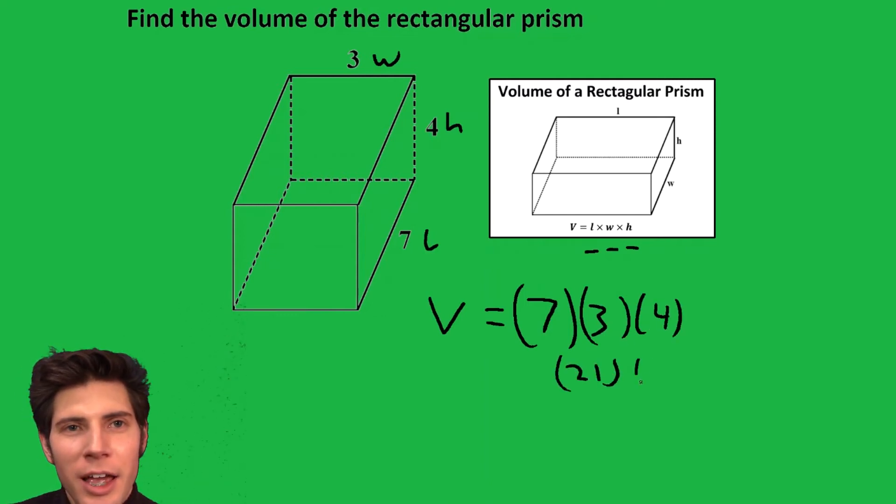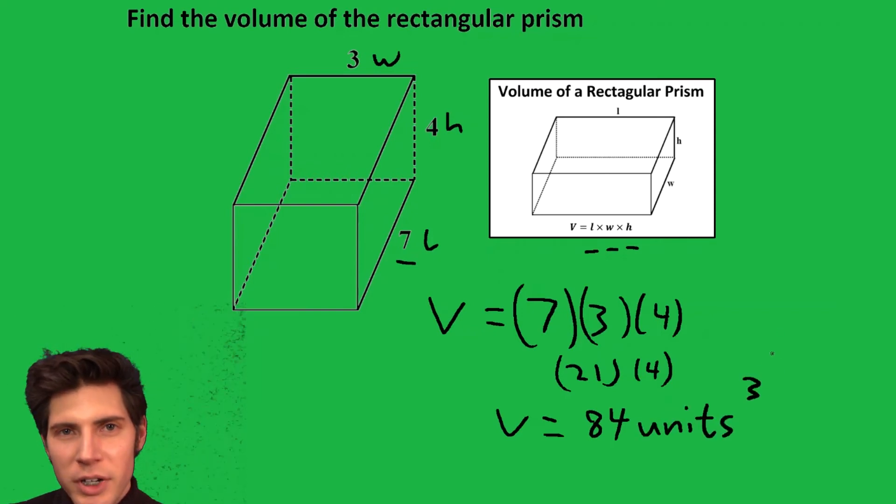Seven times three is 21, and 21 times four is 84. We need to give it a label. They didn't give us any labels, just numbers, so we'll call it units cubed because volume measures cubic units.